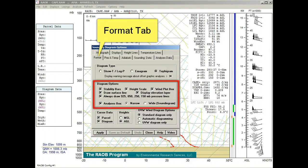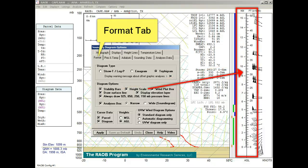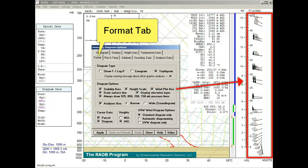The diagram options section contains nine unique options. The stability bars produce a graphical representation of the sounding's lapse rates. The height scale is displayed in kilometers and feet. The wind plot box permits plotting of the sounding's wind data.